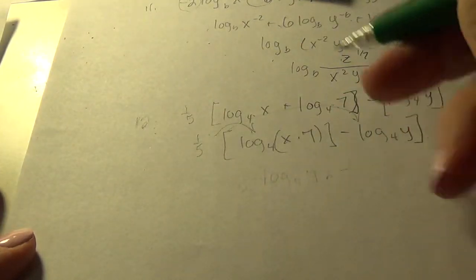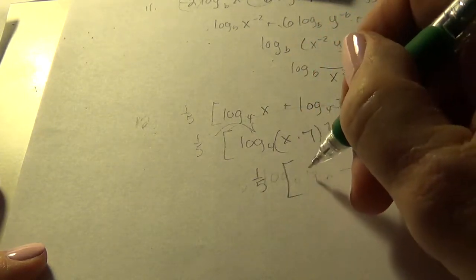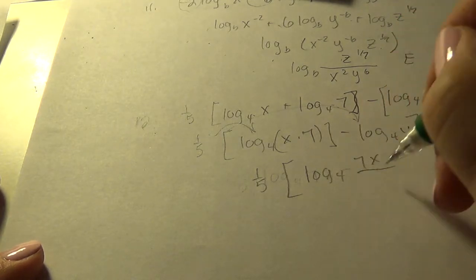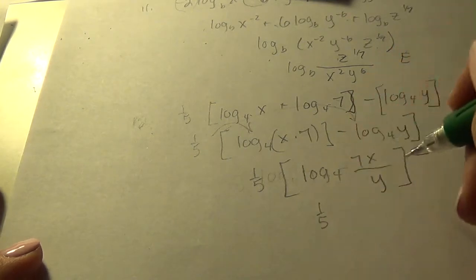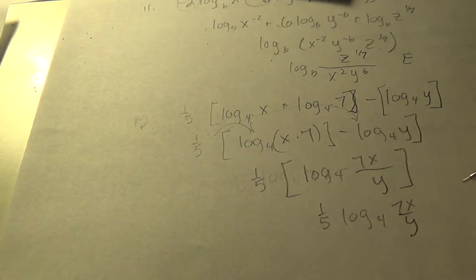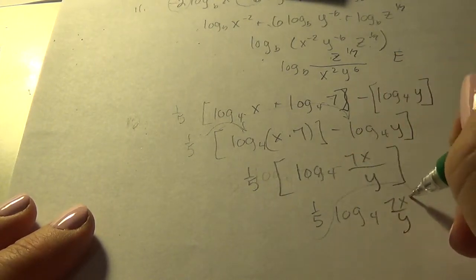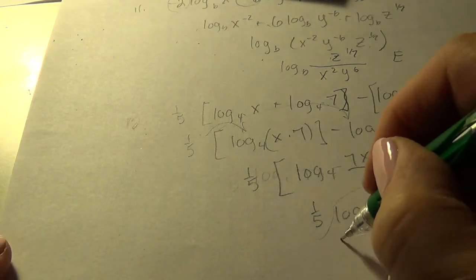Alright, now we have two logs that are subtracted. Leave the one-fifth out. Let's go ahead and write them as one log where the arguments are divided. And now the one-fifth. Alright, is there such an answer as this? No.